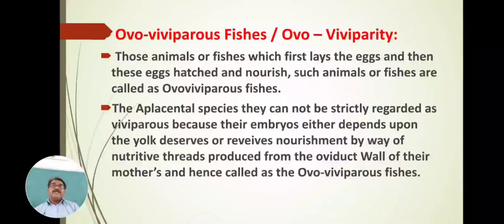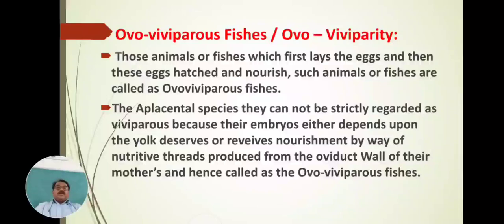Similarly, they hatch and nourish. Such animals or fishes are called ovoviviparous species. The ovoviviparous species may be aplacental. They cannot be strictly regarded as viviparous because their embryos either depend upon the yolk or receive nourishment by way of nutritive threads produced from the oviduct wall of their mothers. Hence they are called ovoviviparous.